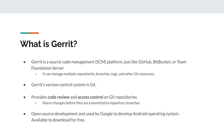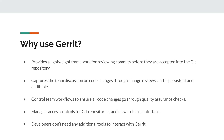Gerrit is free, open source, and it is used by Google to develop the Android operating system. Gerrit's code review workflow is lightweight and captures the team discussion on code changes through change reviews. This information is persistent and auditable. Gerrit allows the flexibility to control team workflows through access controls and ensure all code changes go through stringent quality assurance checks. Access controls manage the Git repository references and the Gerrit web-based interface. Developers do not need additional tools to interact with Gerrit — they just need their local Git client and a browser.